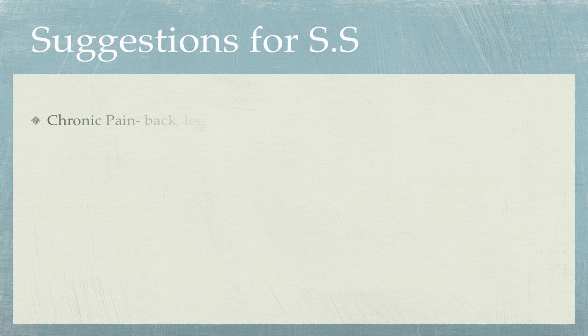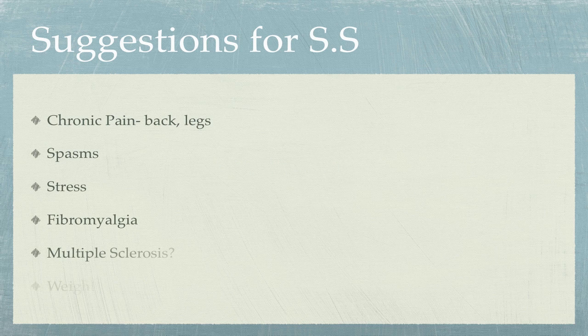When you came in, we talked about some of the issues that are bothering you — the chronic pain in your back and legs, and spasms in the legs. Stress was definitely an issue, and you mentioned fibromyalgia and the diagnosis of that. We also touched on multiple sclerosis, though we didn't go into too much detail about what kind of treatment you're getting or how aggressive it is. We also talked a little bit about weight and weight issues.